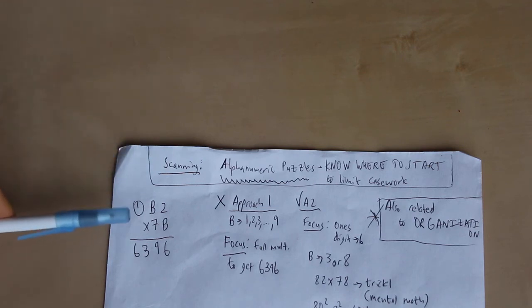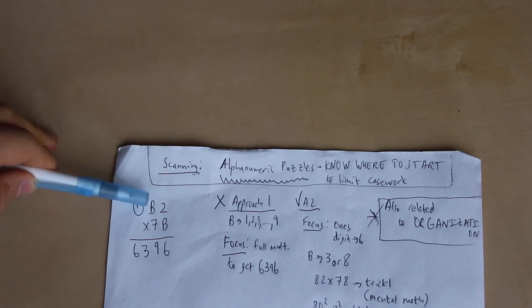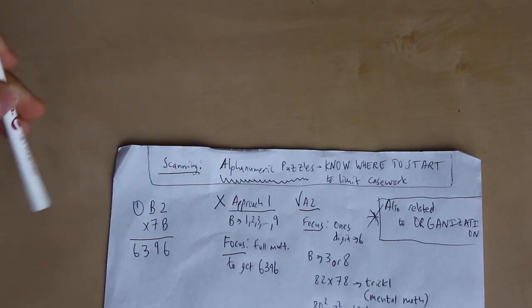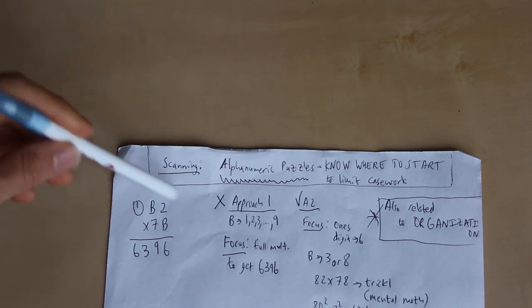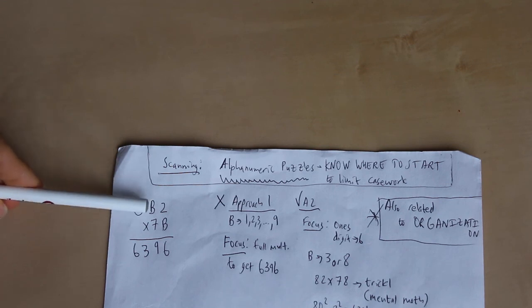So let's say here's our question. We have B2 times 7B equals 6396. So if you've never seen these, the way this works is that B is supposed to be a digit from 0 through 9. In this case, clearly it's not a zero because this is a two digit number. So in other words, the letters stand for a digit. They don't stand for an entire two or three digit number. And we're supposed to figure out what number for B would make this true. And every time you see a letter such as B, it always has to be the same value. So for example, if we said B to be four over here, it has to be a four here as well.